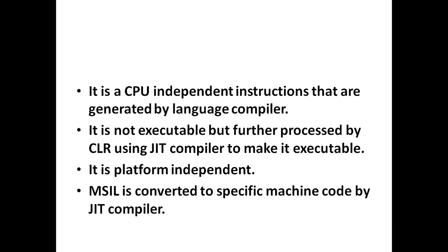The MSIL code is converted into particular environment-specific machine code by the JIT compiler. This is done before MSIL can be executed. Also, the MSIL is converted into machine code on a requirement basis — that is, the JIT compiler compiles the MSIL as required rather than compiling all of it at once.